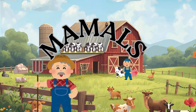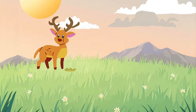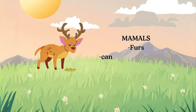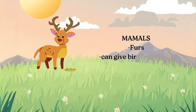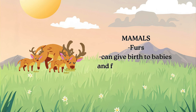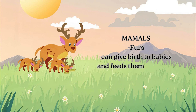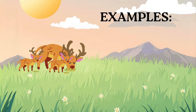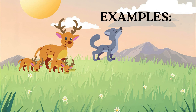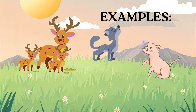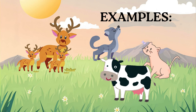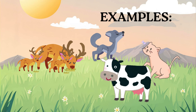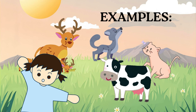First, we have mammals. Mammals have hair or fur on their bodies. Most of them give birth to live babies and feed them with milk. Examples are dogs, cats, cows, and even humans.